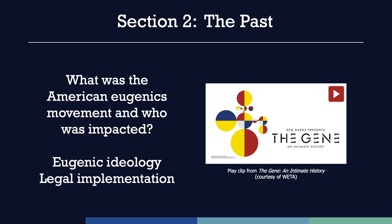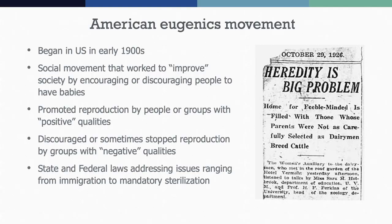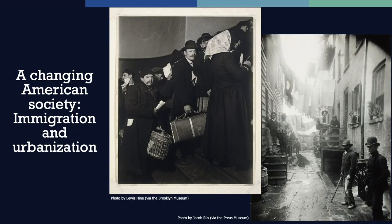In Section 2, we will explore the American eugenics movement, including the philosophies and agendas that drove the policies that allowed forced sterilizations, which aimed to prevent certain people from passing on what were deemed negative traits to future generations. As we learn from the film, the American eugenics movement began in the early 20th century. The main goal was to improve society and reduce the burden of people who some considered to be inferior. The movement encouraged reproduction among people or groups seen to have positive qualities, while discouraging or preventing reproduction among those with negative qualities.